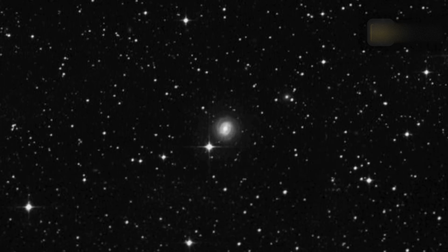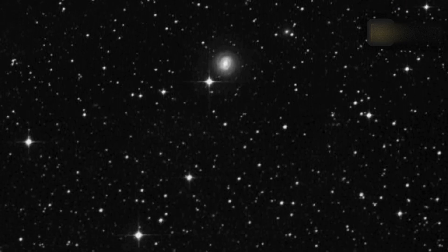NGC 3783 is a Type 1 Seyfert Galaxy, which is a galaxy with a bright central region, so it's particularly bright itself, as far as galaxies go.